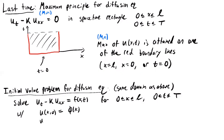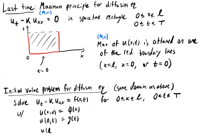When time is equal to zero, u is equal to some function phi of x — this is like the initial heat of the metal rod between x equals zero and x equals L. When x is equal to zero, let's say the solution looks like a function g of t, describing the heat source on the left end of the rod. And when x is equal to L, the solution is a function h of t, describing the heat source on the right end.